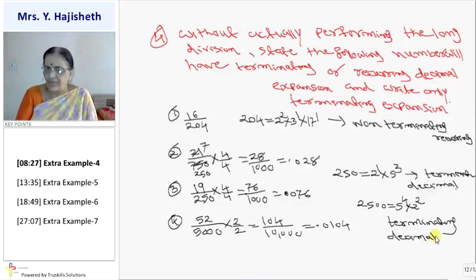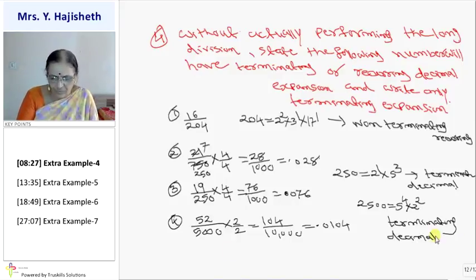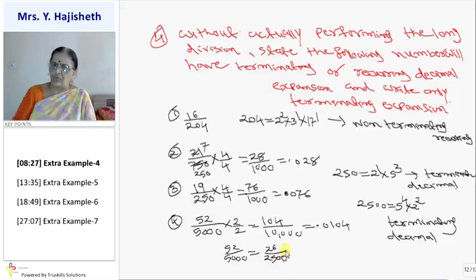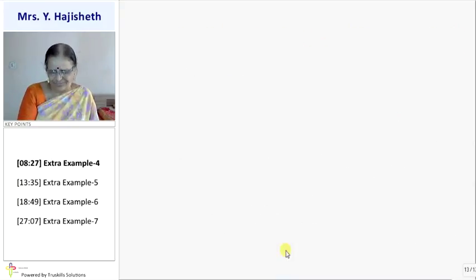If I reduce it, then we can reduce it. It is 26 by 2500. 52 upon 5000 can be written as 26 by 2500. And 2500 is of the form 2 raised to m into 5 raised to n. So it is terminating.